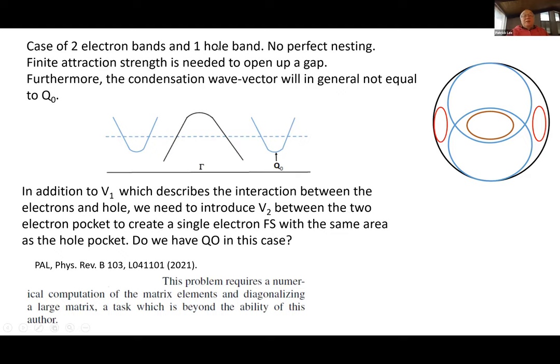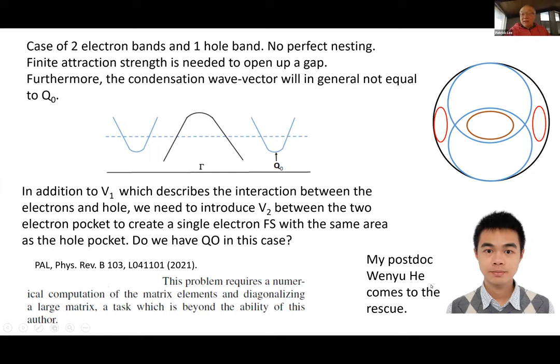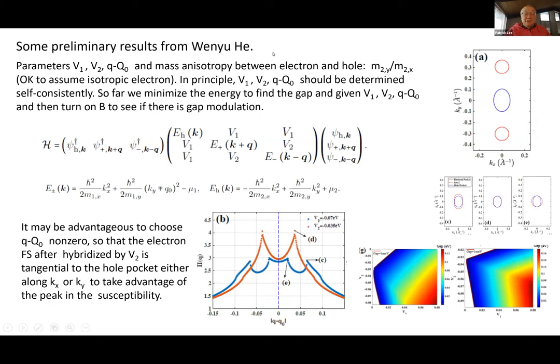So it's not so easy to extend what was done before from one hole to a two electron situation. When I wrote this paper I inserted a sentence to test whether an author confessing his own inadequacy would get past the referee. Apparently it did. So I said this is a task which is beyond the ability of this author. Fortunately my postdoc Wen Yu'e came to the rescue and he's now working on tackling this two electron one hole problem.